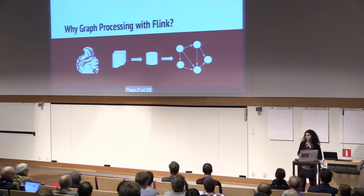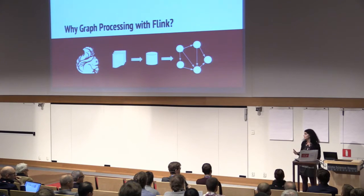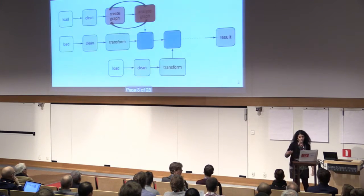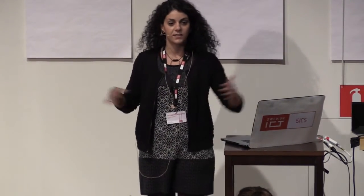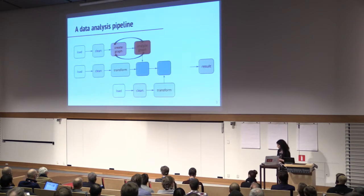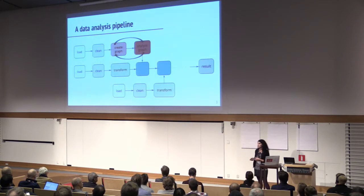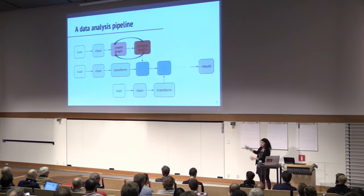Why would you want to do graph processing with a system like Flink, which is a general purpose system for distributed data processing? We should look at the typical data analysis pipeline. When you have a data problem, you have several steps to follow. You might have data from different sources — you need to clean them, transform them, and then at some point create a graph out of this raw data, find an analysis algorithm, analyze this graph, get some results, combine it with your other data, and finally get your answer.